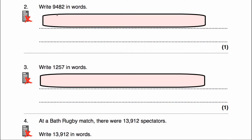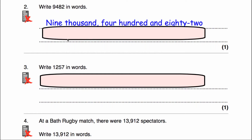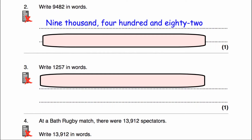Question 2 says write the number 9482 in words. That is 9,482. We write it as we say it: nine thousand, four hundred and eighty-two.